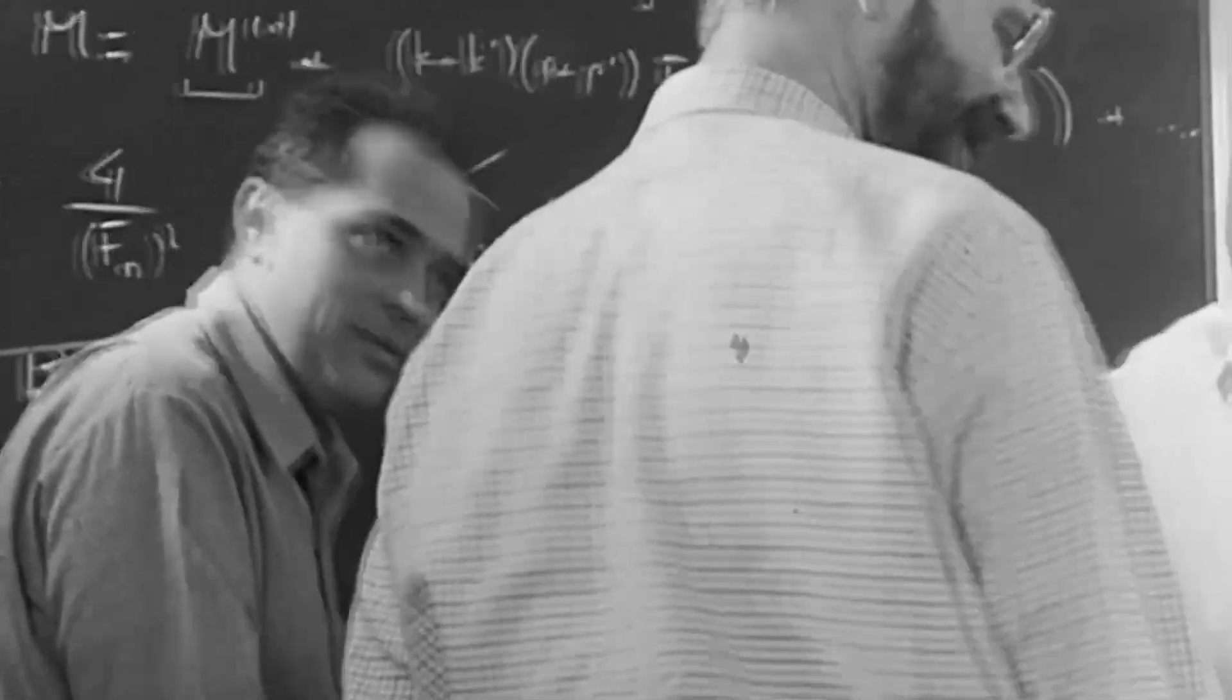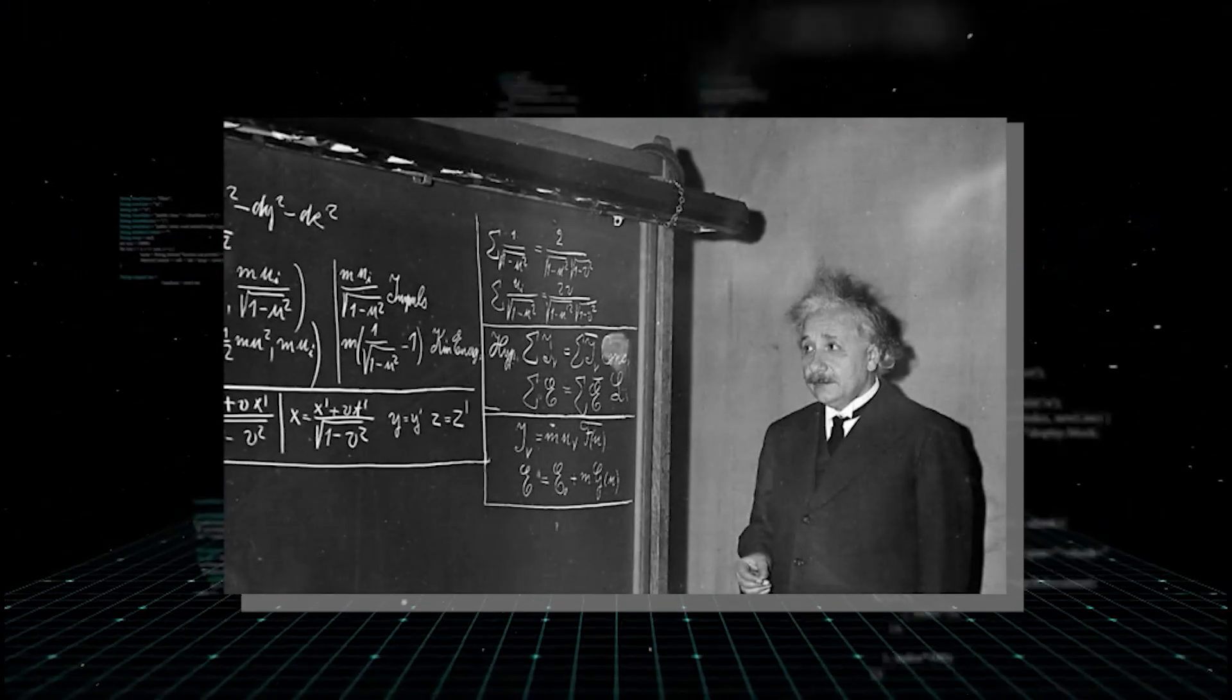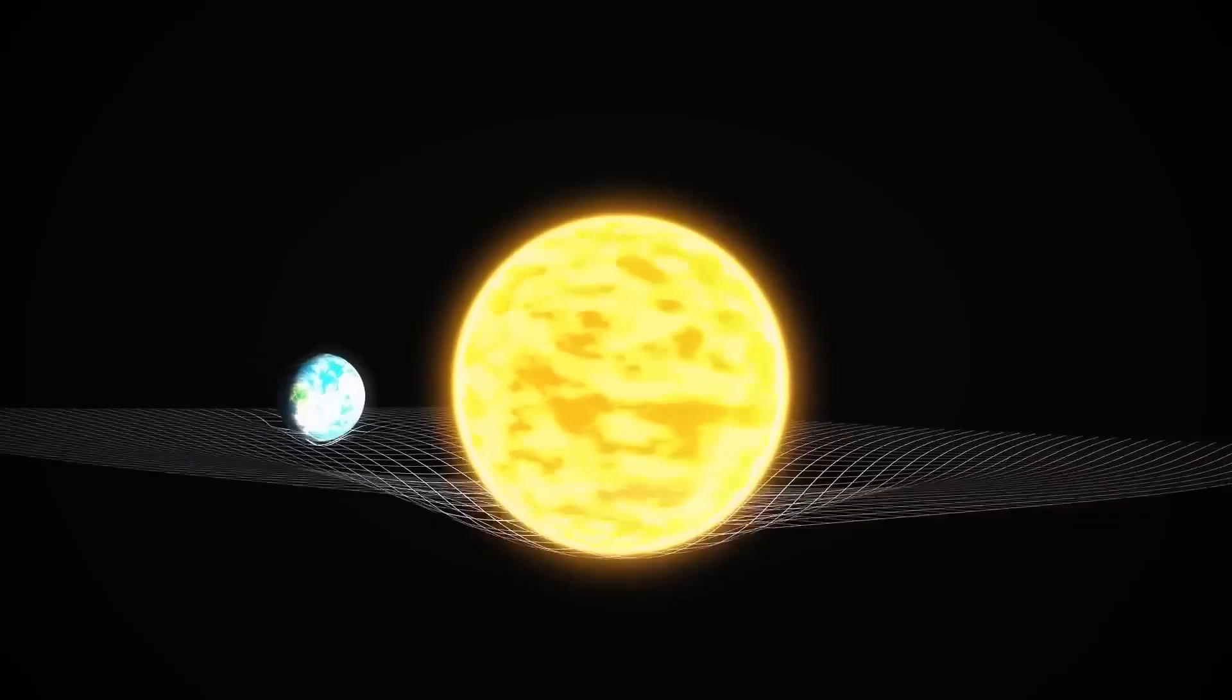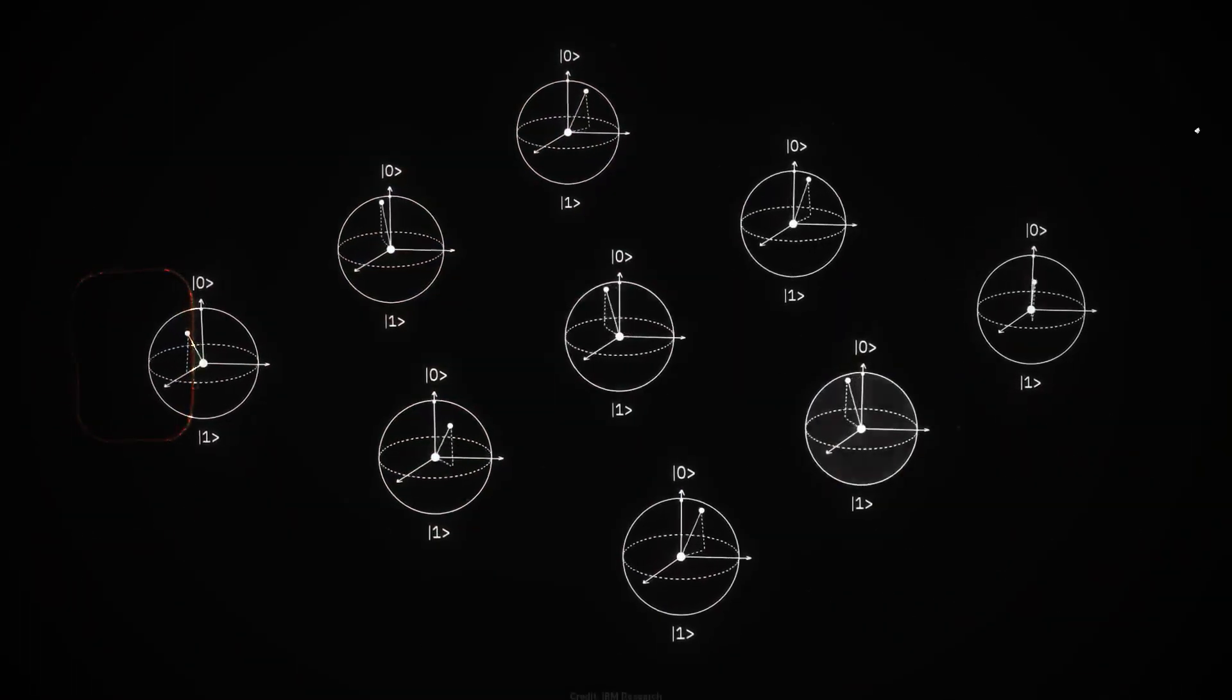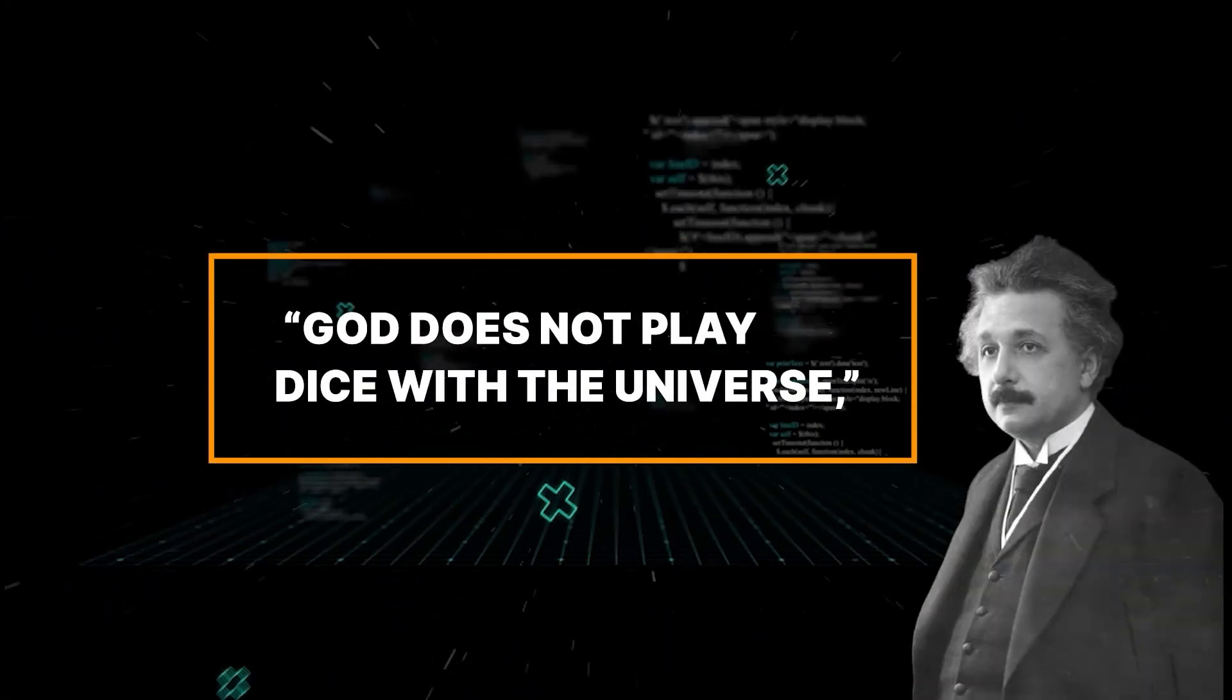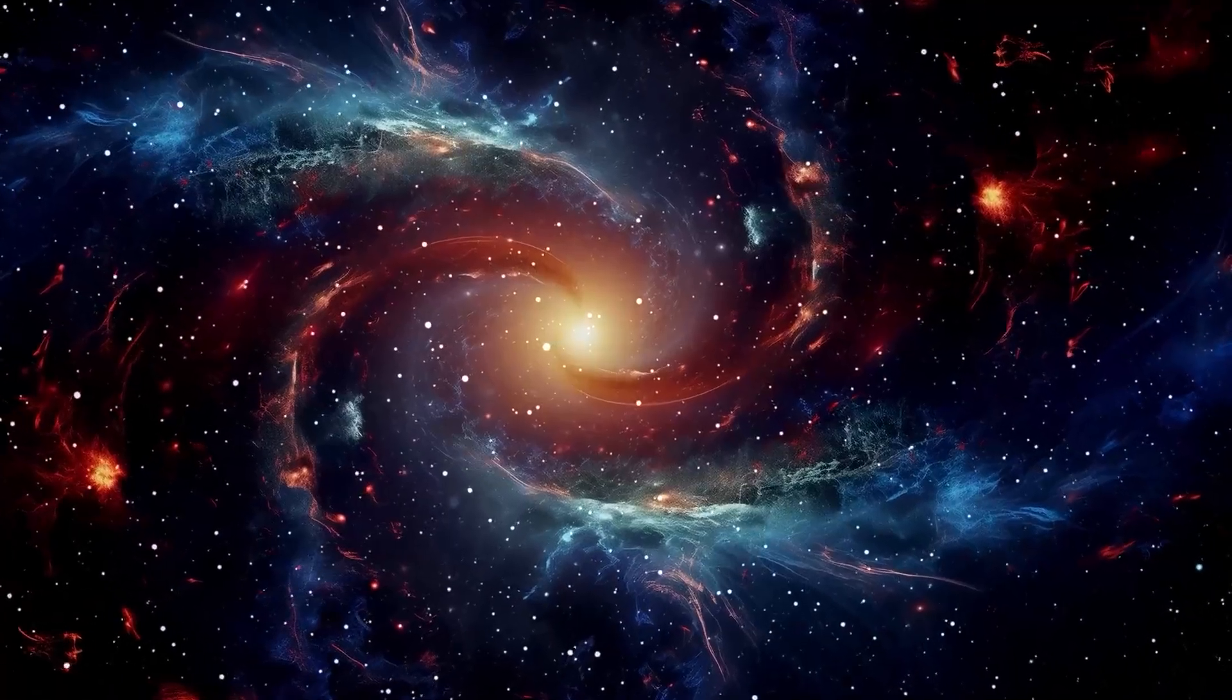His chalk keeps returning to the slate, hunting an equation so perfect it would hum like a tuning fork through the whole cosmos. The snag is quantum theory, the unruly jazz refusing to harmonize with his classical symphony. Quantum mechanics suggest that particles can jump, blur, and even exist in two places at once. Einstein recoils. God does not play dice with the universe, he mutters, convinced nature is orderly and exact.